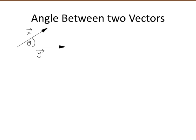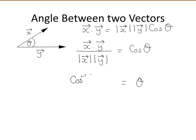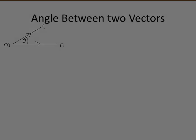How can we calculate the angle between two vectors? From the definition of the dot product, the dot product of vector x with vector y is equal to the modulus of x times the modulus of y times the cosine of the smaller angle between the two vectors. Dividing both sides by the modulus of x and the modulus of y, and if you want to find theta, then theta is equal to the cosine inverse.